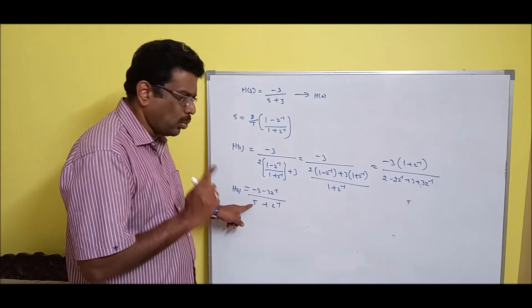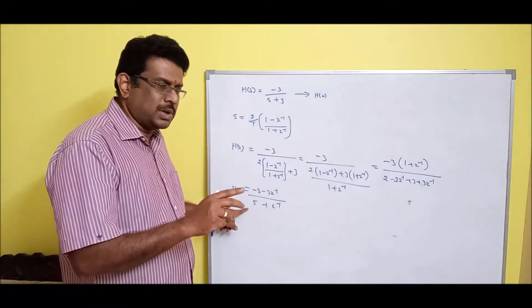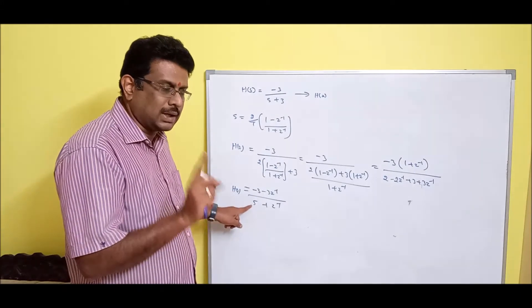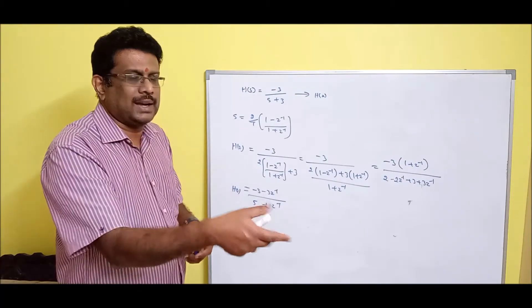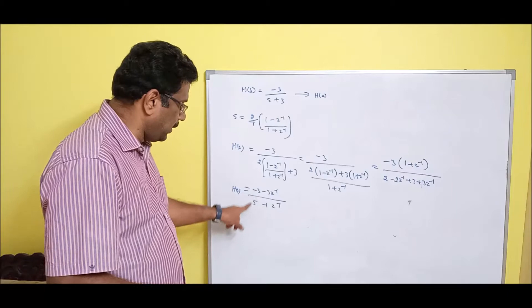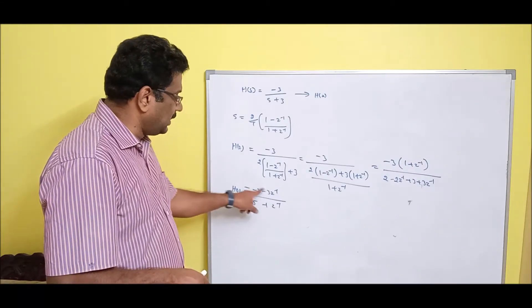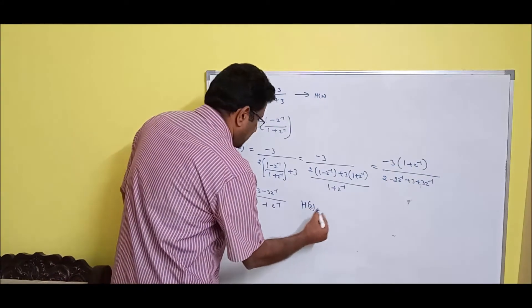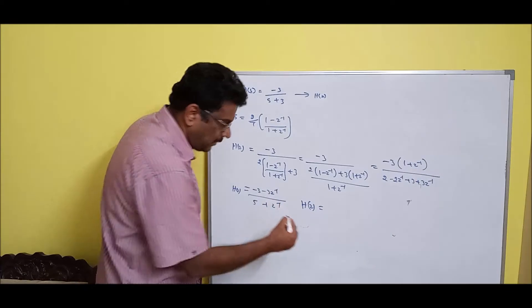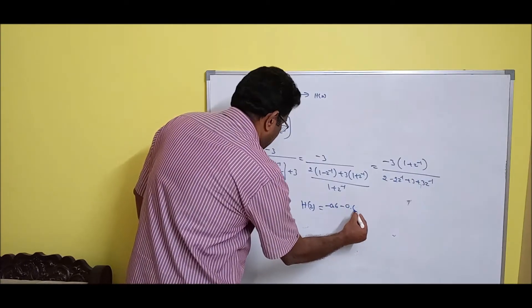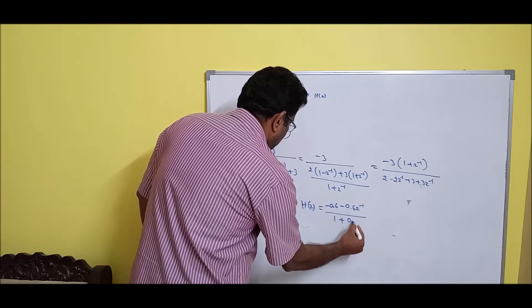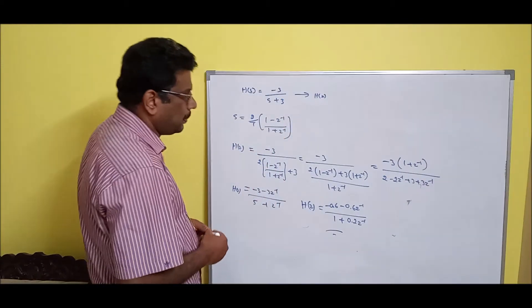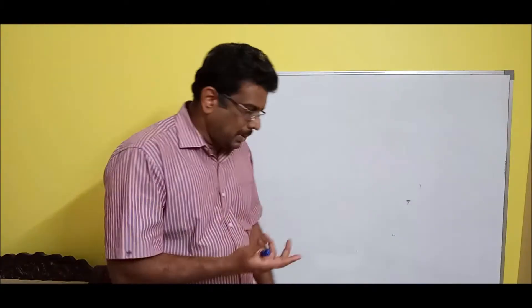The denominator's first term must always be 1, because poles are responsible for stability and that constant must be 1 — you'll see why from a diagram later. So divide everything by 5. The final answer is H(z) = (-0.6 - 0.6z⁻¹) / (1 + 0.2z⁻¹).